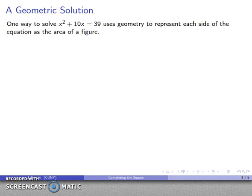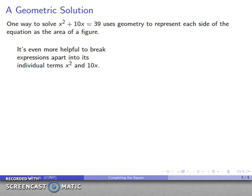So for example let's consider this equation x squared plus 10x equals 39, and one way to look at this is to use geometry to represent each side of the equation. And how we'll do that is we'll let these terms correspond to the area of some figure. Now it's even more helpful if we break apart our expressions into individual terms. So for example this left-hand side I have an x squared, I have a 10x. If I take a look at these two terms individually, I can try and draw a geometric picture of what they look like.